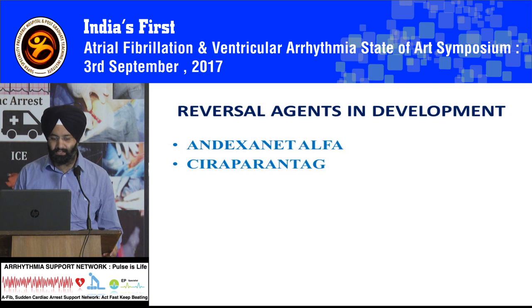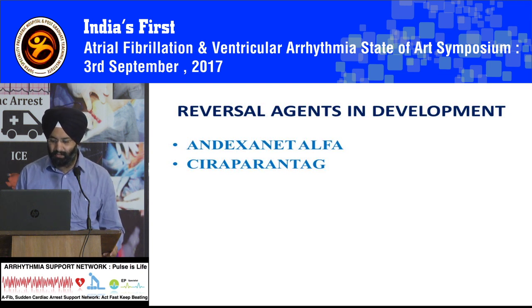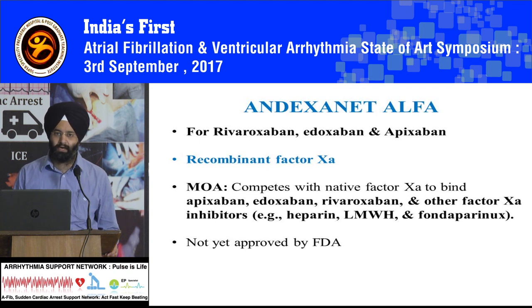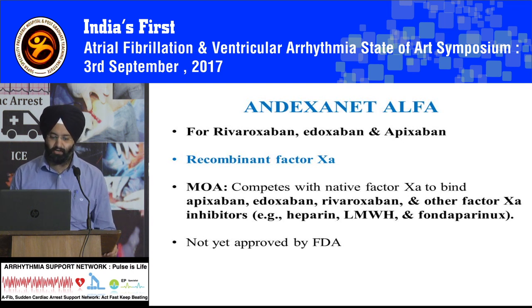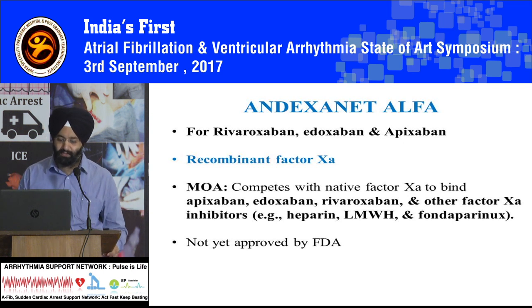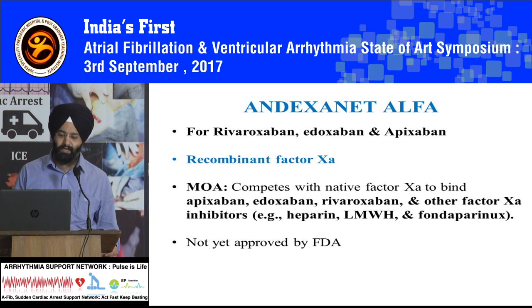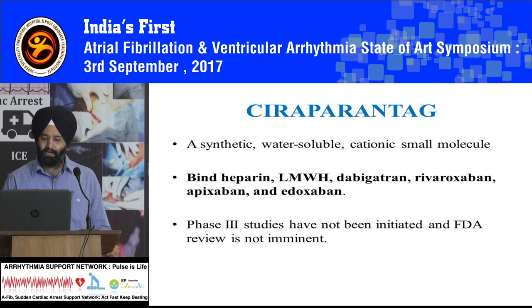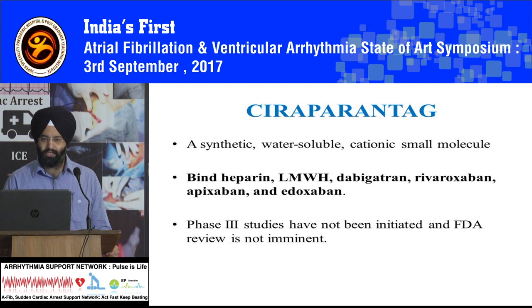Andexanet alfa and ciraparantag are two newer reversal agents under development. Andexanet alfa is a recombinant factor 10A for rivaroxaban, edoxaban, and apixaban. It competes with native factor 10A to bind to apixaban, edoxaban, and rivaroxaban. It also binds to heparin and low molecular weight heparins. It has not yet been approved by the FDA, but they have submitted the findings of the trials and results will be out by early 2018. Ciraparantag is effective against heparin, dabigatran, rivaroxaban, apixaban, and edoxaban — so it is a broad-spectrum agent — but Phase 3 trials are still ongoing.